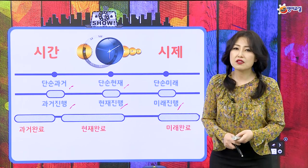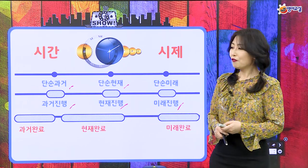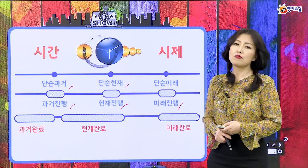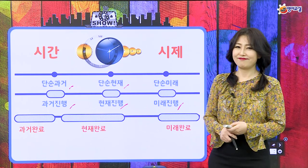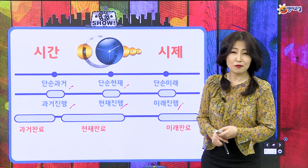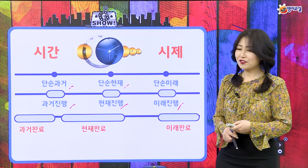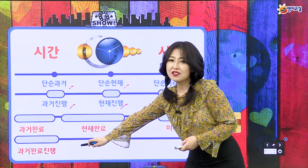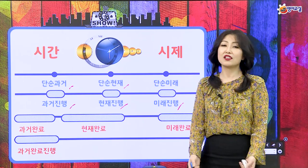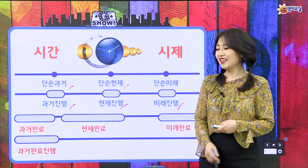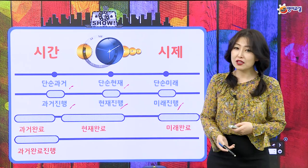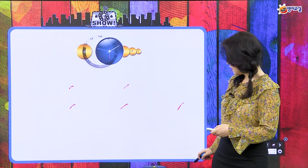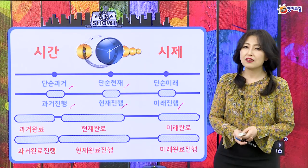벌써 아홉 개 시제를 알았네요. 그러면 열두 시제라고 하셨는데 나머지 세 개는 뭐예요? 나머지 시제는 과거 완료 진행이에요. 완료도 힘든데 완료 진행도 있어요? 있어요. 미안해요. 그렇지만 과거 완료 진행이 있으면 현재 완료 진행이 있다는 얘기고, 나머지 하나는 미래 완료 진행도 있다는 얘기예요.